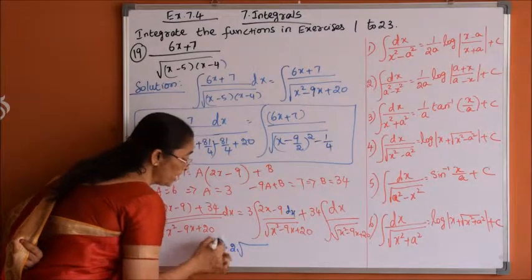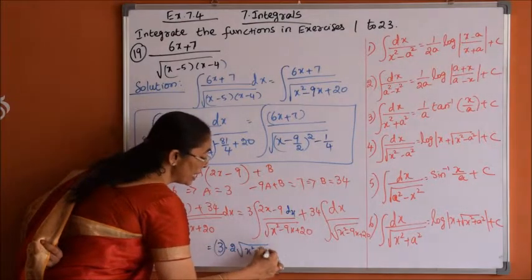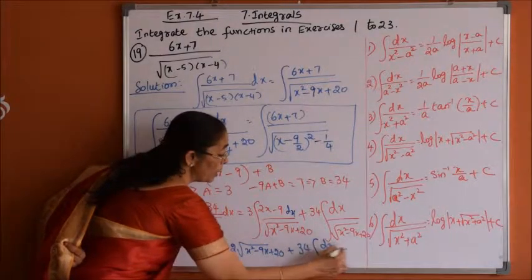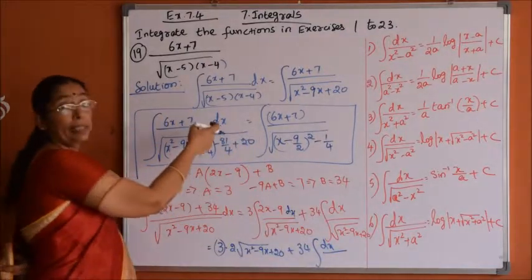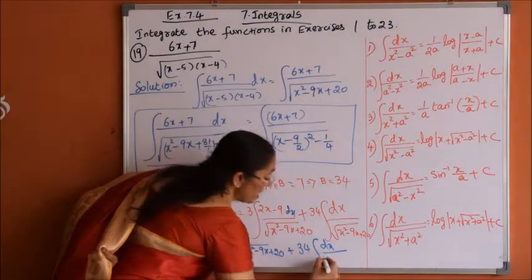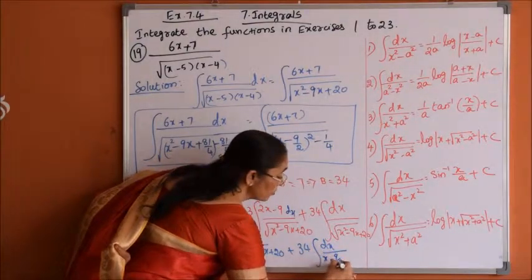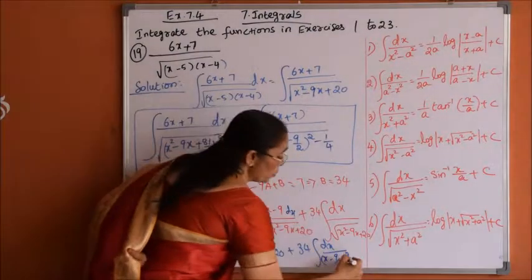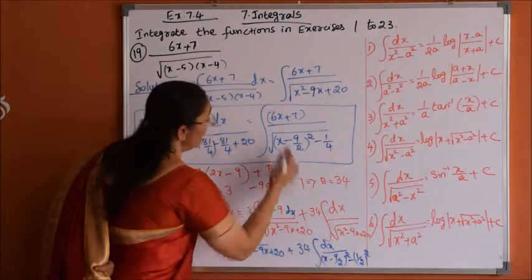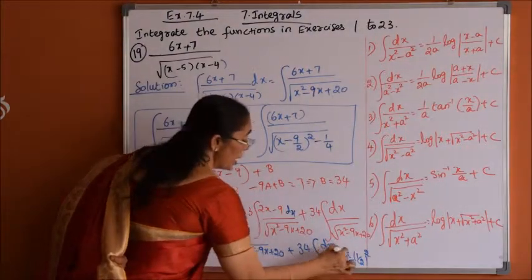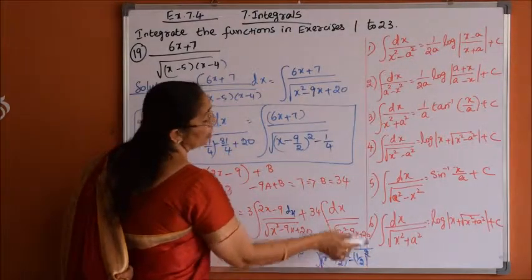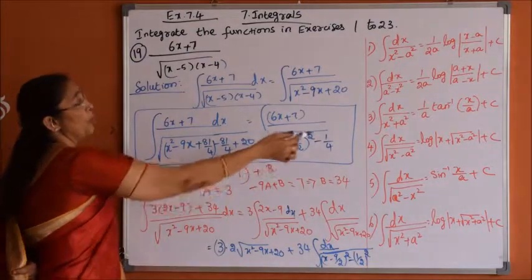For the second integral, 34 times the integration of dx over root(x squared minus 9x plus 20), we apply the completing square method. This expression is nothing but x minus 9/2 whole square minus 1/2 whole square. Taking the square root, this matches the formula for root over (x squared minus a squared), which is the fourth standard formula.